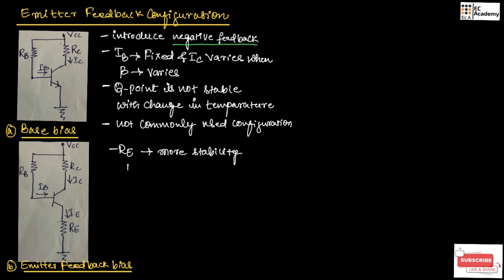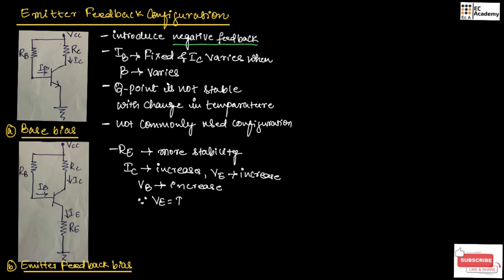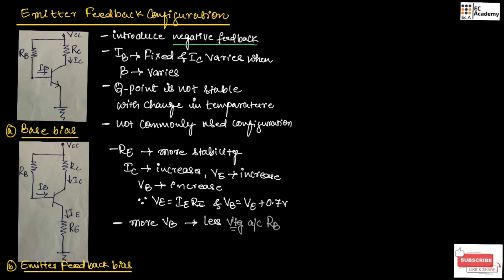Now, if IC increases, the voltage VE will also increase, causing the voltage across the base VB to increase, since VE is equal to IE times RE and VB is equal to VE plus 0.7 volts. So, if VB increases, more VB will cause less voltage across RB. If there is less voltage across RB, then there will be less base current, which opposes the increase in IC.